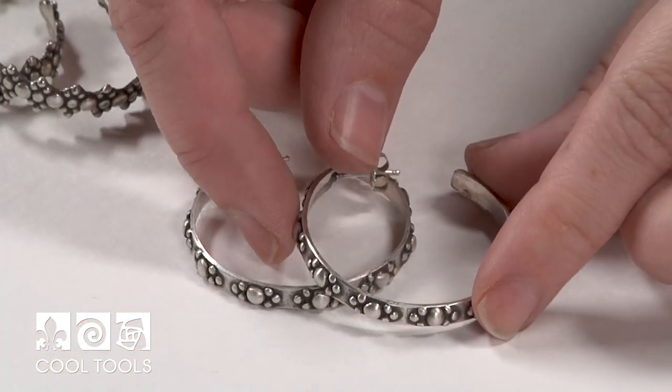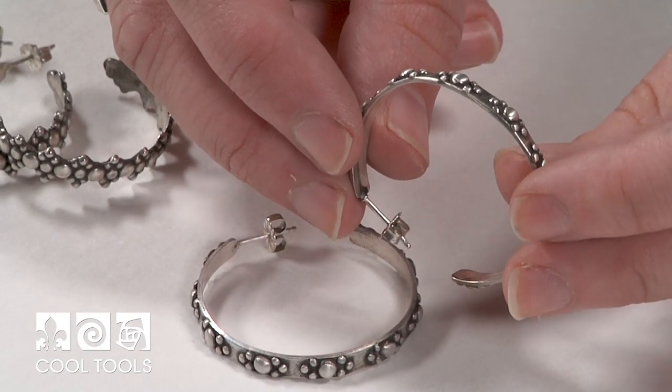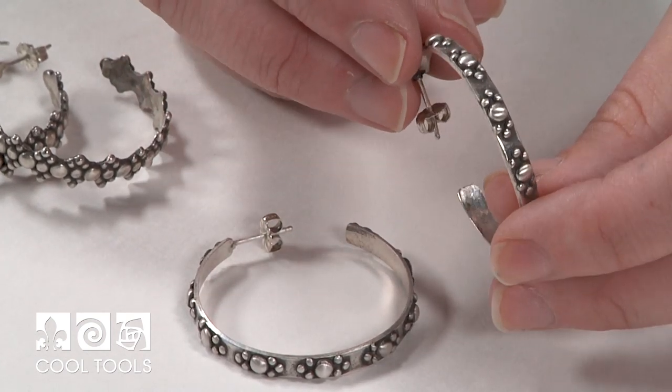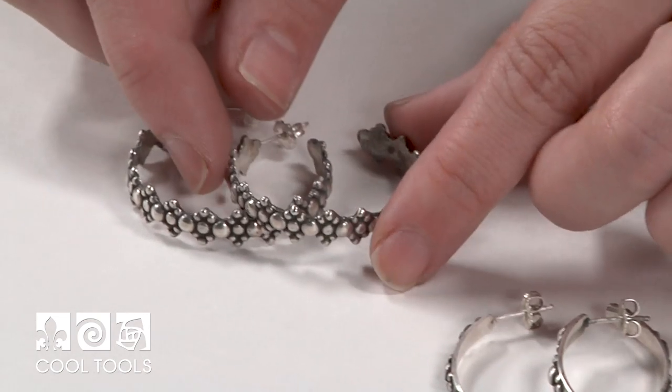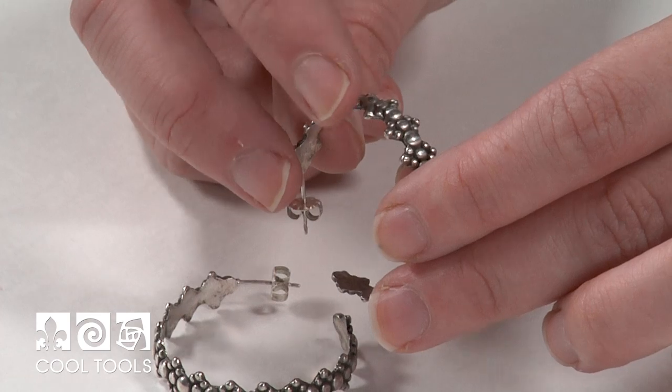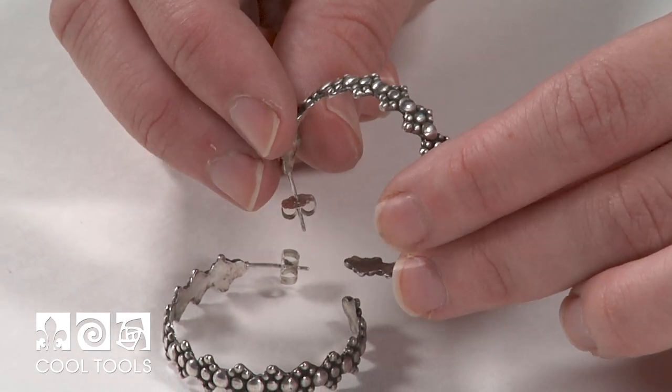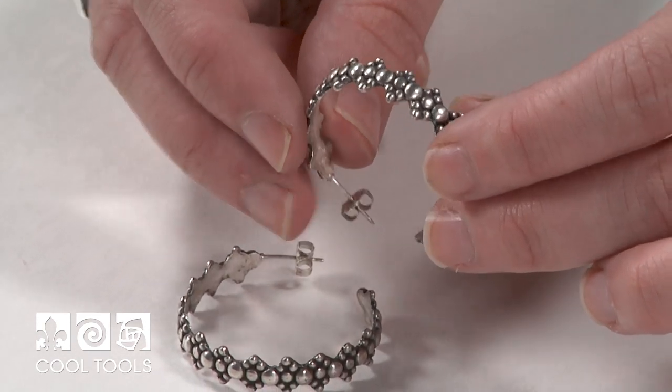So here are my finished hoops. I darkened the low areas with patina gel. That way there's a nice contrast and you can really see the details. I also made another pair where I cut right up to the edge of the accents that I added. And I think that adds a nice little visual interest. I only used one of our finishing touches molds in these two very different looking earrings. With all the shapes and sizes that we offer there are endless creative possibilities. Thanks for watching.